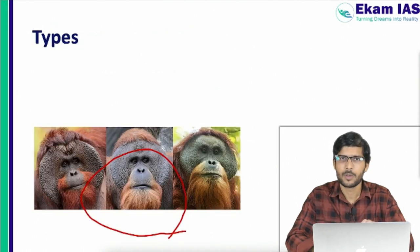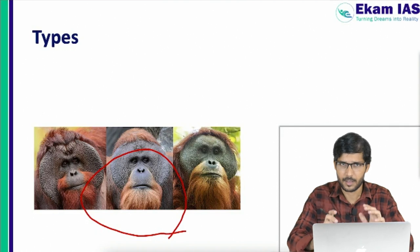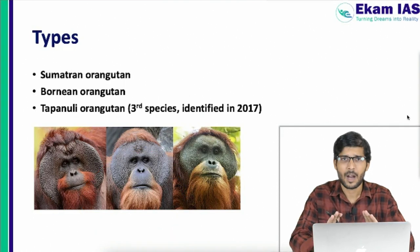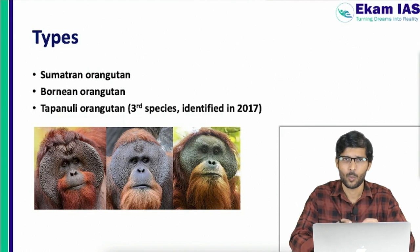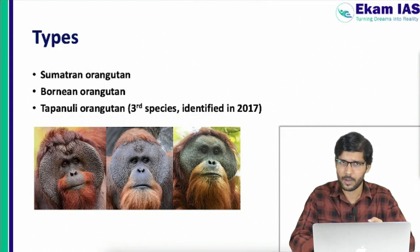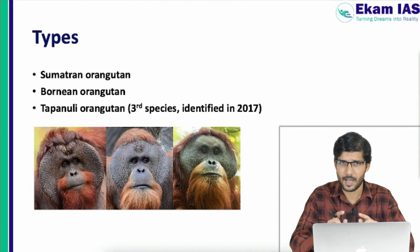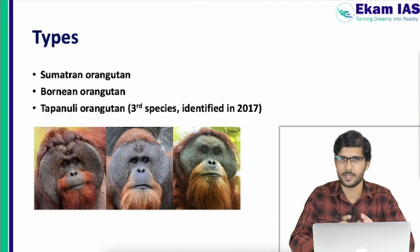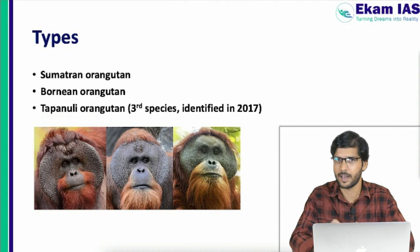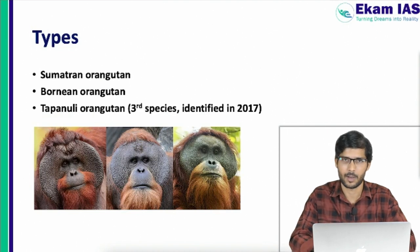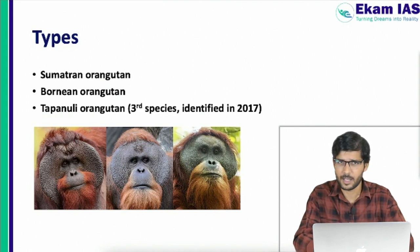There are only three species of Orangutans: the Sumatran Orangutan, the Bornean Orangutan, and the Tapanuli Orangutan. The Tapanuli Orangutan is the latest species, identified in 2017.